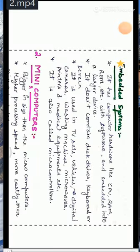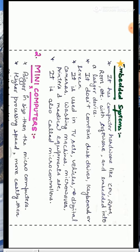The next microcomputer is embedded system. An embedded system contains hardware like CPU, RAM, ROM, etc., with software which is embedded or used in large devices. Embedded systems are used in TV sets, vehicles, cameras, washing machines, microwaves, printers, and medical equipment.